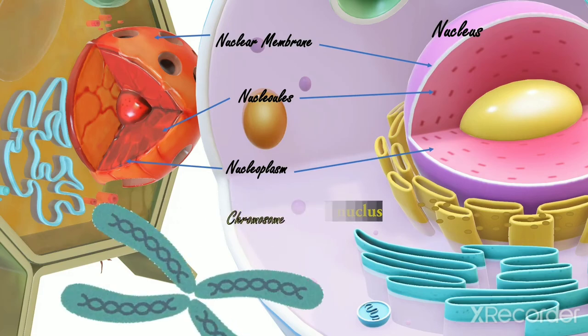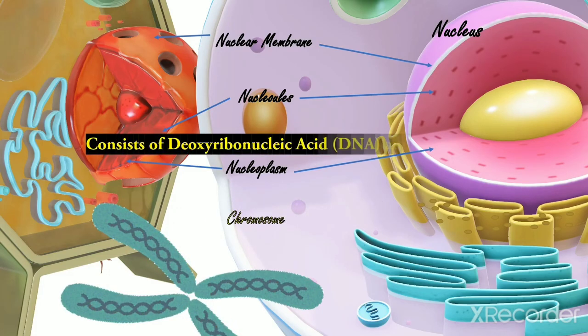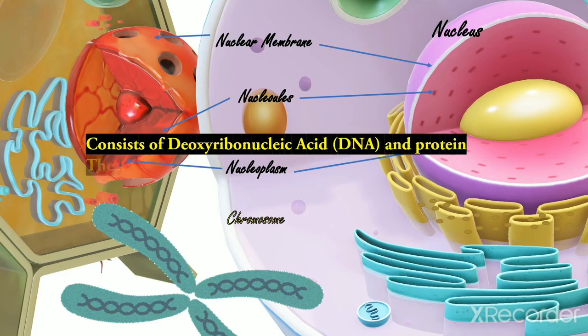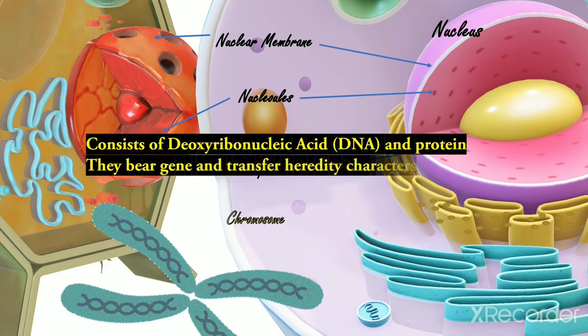They are thread-like structures and consist of deoxyribonucleic acid and protein. They bear genes that carry and transfer heredity characters from one generation to the next.